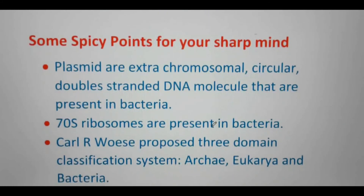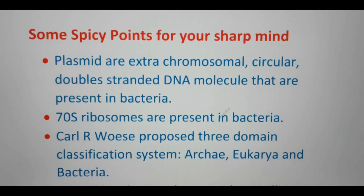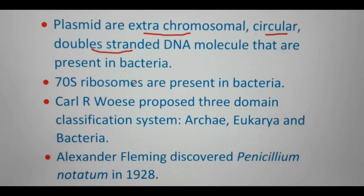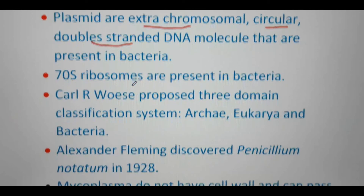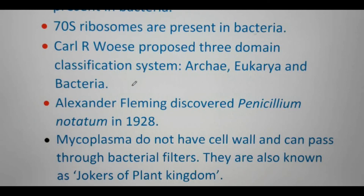Some additional points to enhance your knowledge. First: plasmid — plasmids are present in bacteria and are extra-chromosomal structures. The bacterial chromosome is separate, and the DNA molecules present apart from the chromosome are called plasmids. They are circular and double-stranded. Through plasmids, bacteria can reproduce, and transposon functions can also be performed.